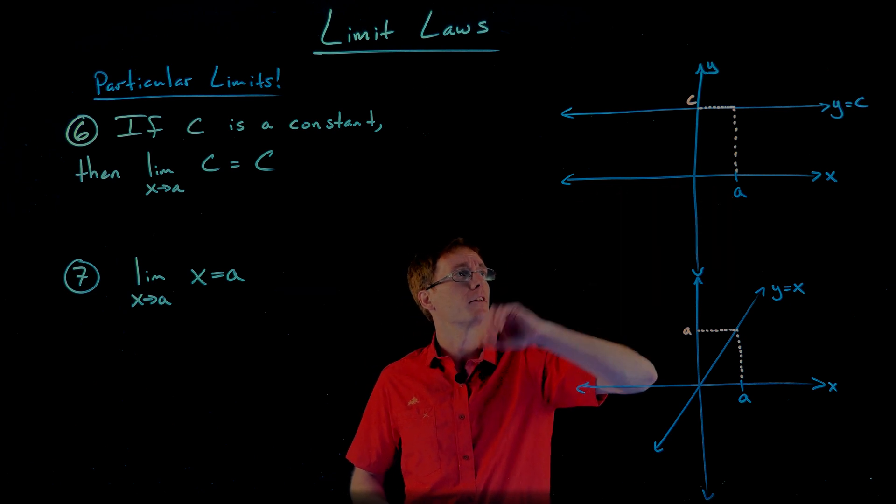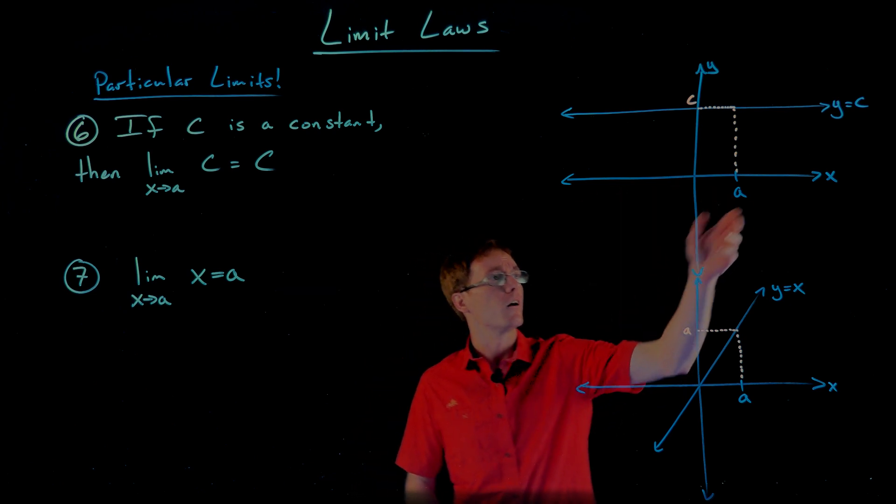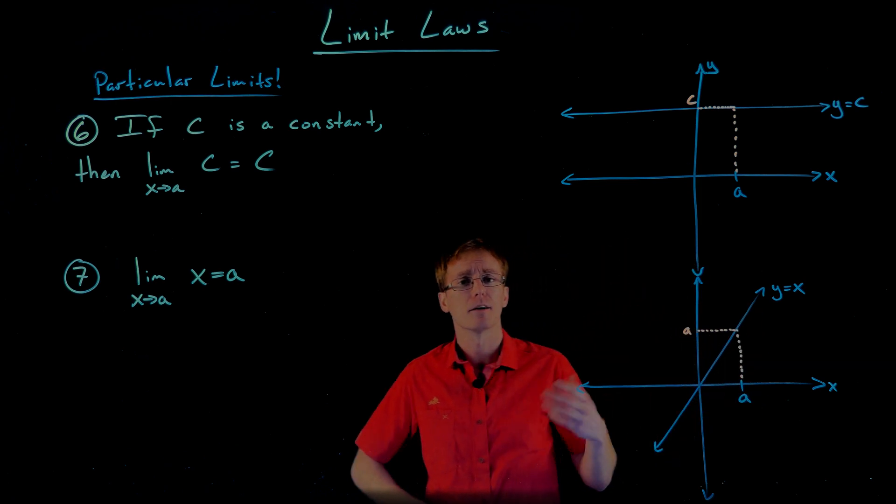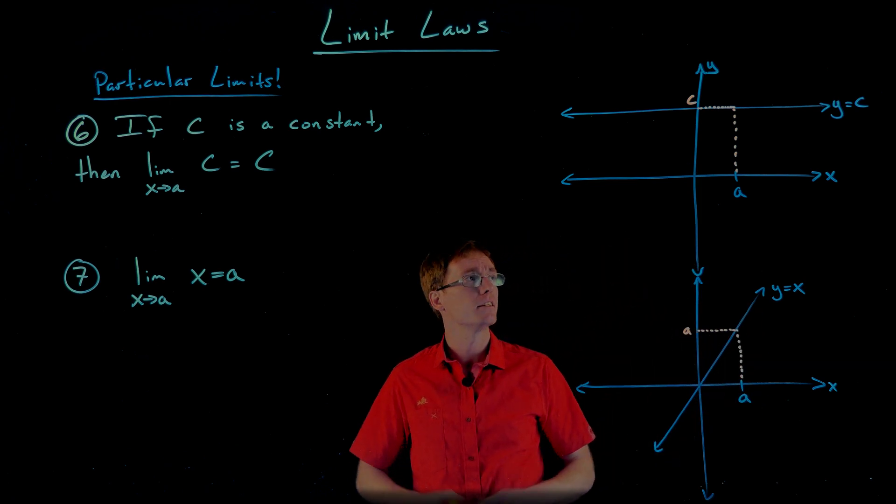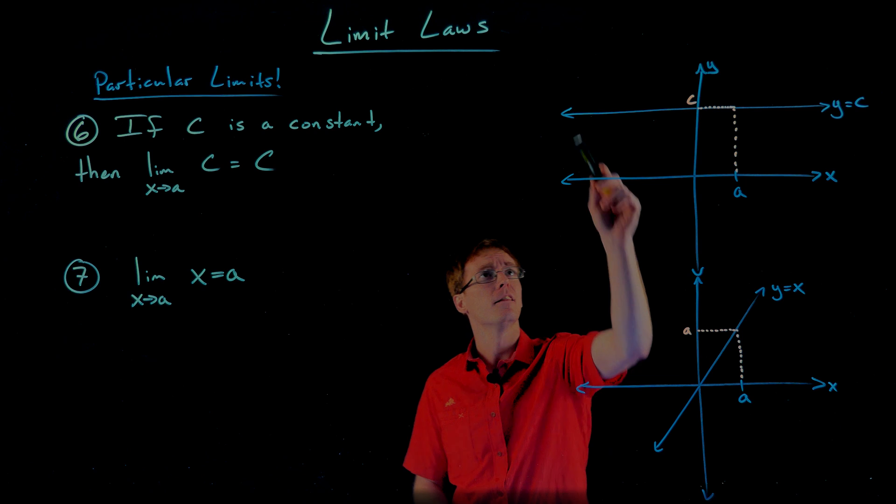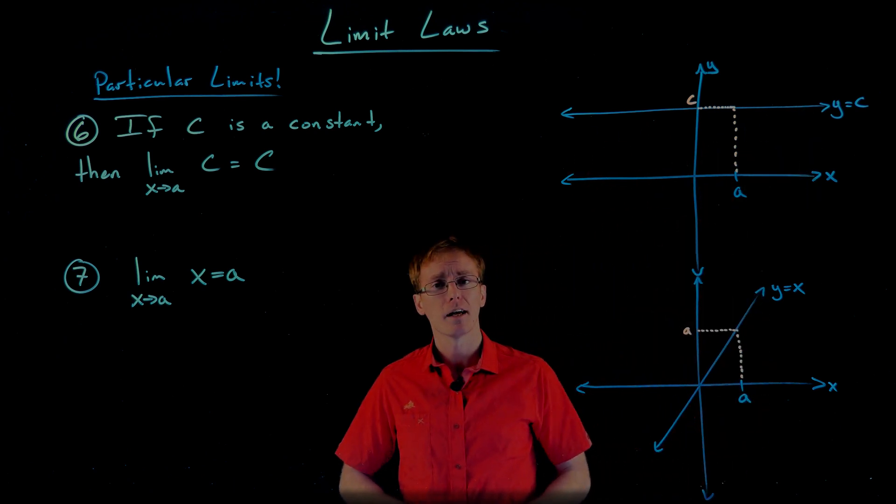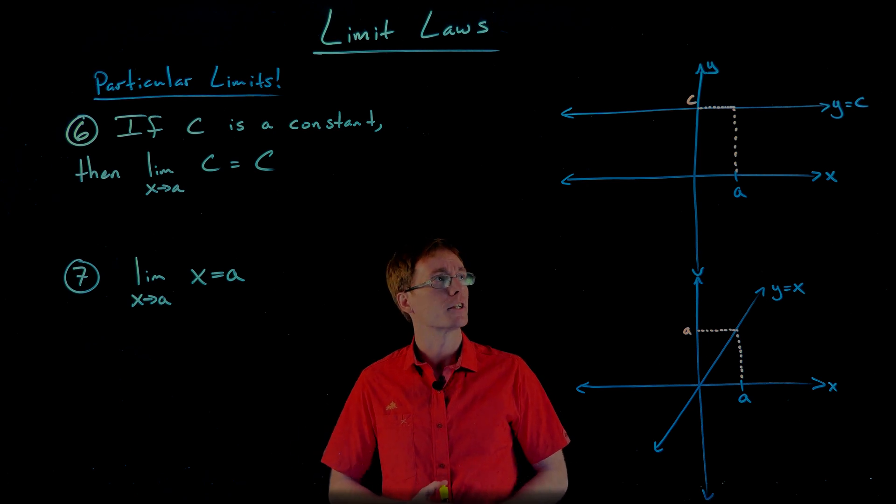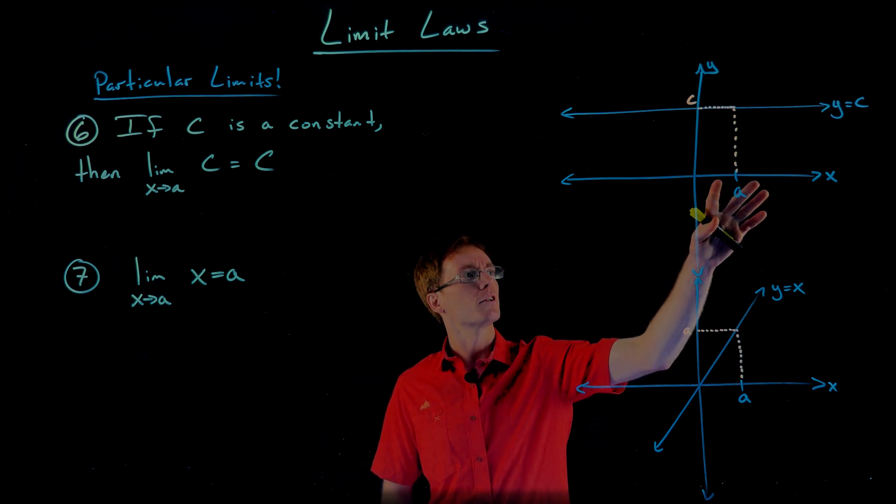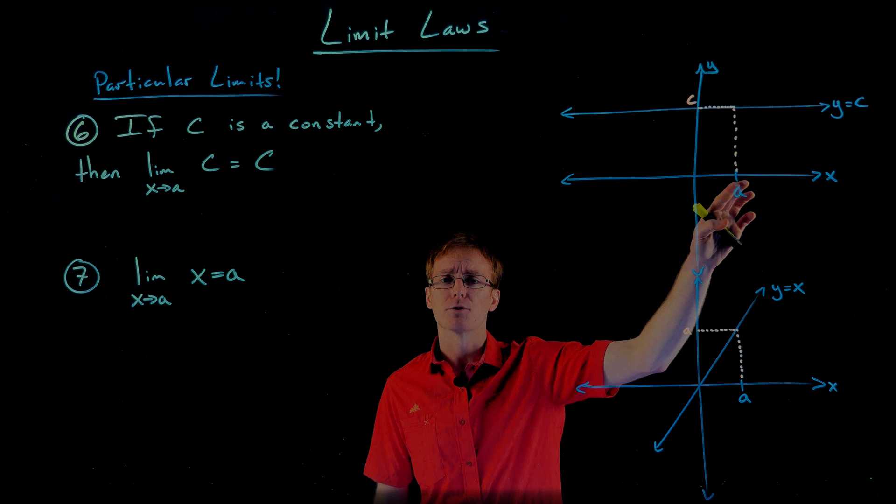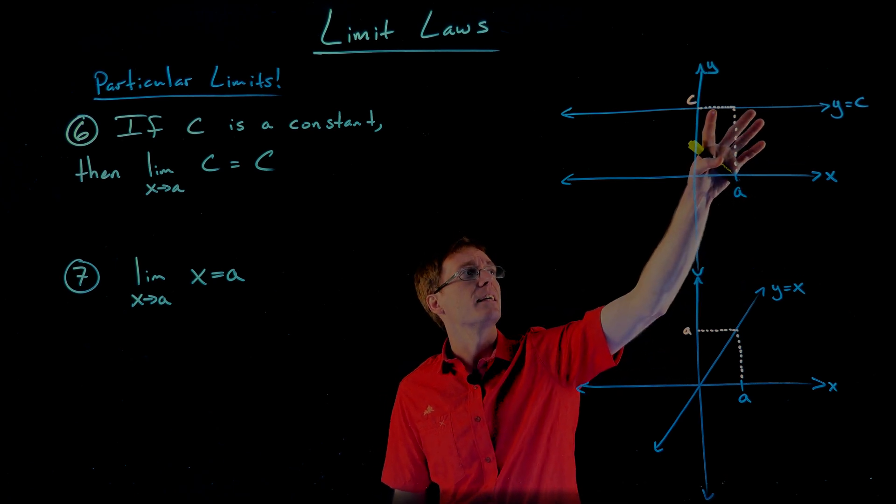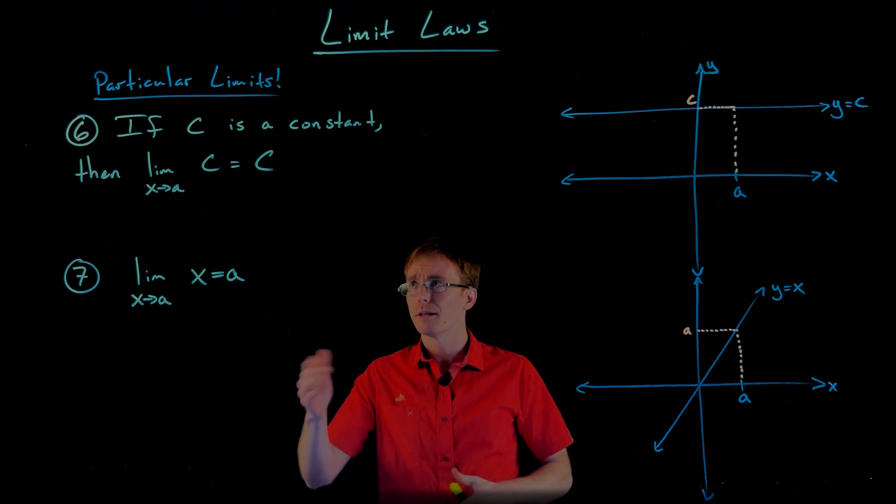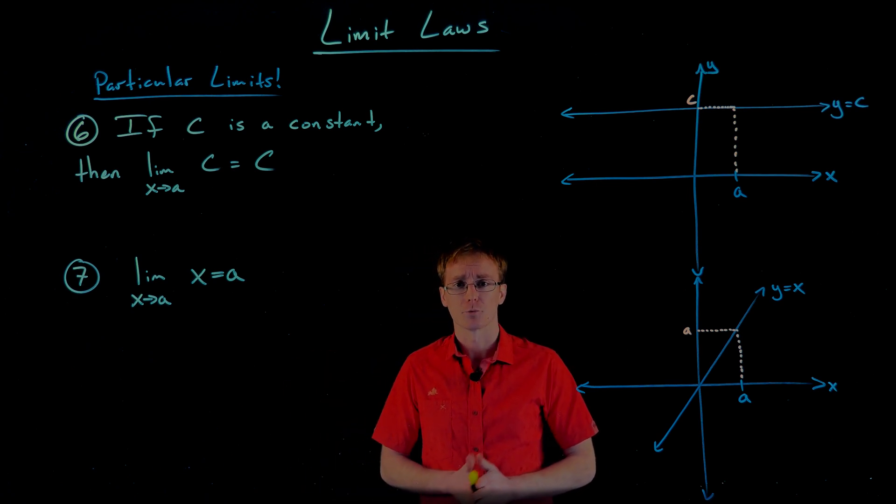We can kind of see that graphically over here as well. On these axes, I graphed what a constant function would look like. If y is equal to c, then y is some constant function. The graph of that is just going to give us a horizontal line. I decided to make c positive. It could be negative or zero, and that won't change the argument here. But as we get closer and closer to x equals a on either side, the output is always the same. It's always constant, so the output is always c. So the limit is going to be c as well.